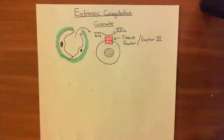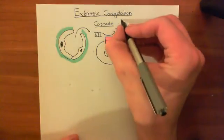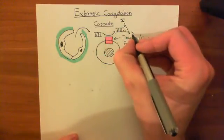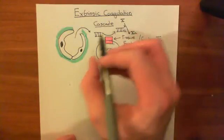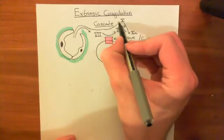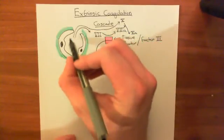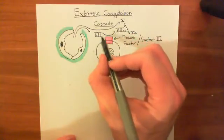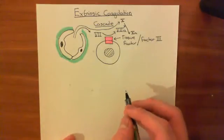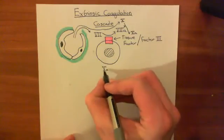Factor 7a is capable of doing the same thing as factor 9 with factor 8 in the intrinsic coagulation cascade — it's capable of activating factor 10. Factor 10 also came out of the bloodstream through the cut and is now in the extracellular fluid. So factor 7 is activated to factor 7a, and then factor 7a activates factor 10 to factor 10a. You now have factor 10a in the vicinity of the cut.